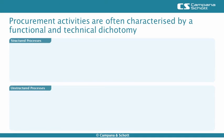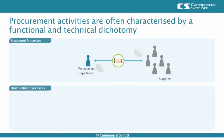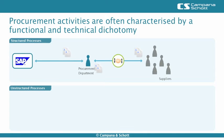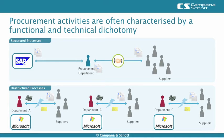Procurement activities are often characterized by a functional and technical dichotomy. The Central Purchasing Department selects suppliers, negotiates frame agreements, and executes the formal ordering. Supplier master data, frame agreements, as well as formal orders are often managed in SAP. The operating departments define their demands, obtain offers, and evaluate them with regard to their functional suitability. On the IT side, these activities are supported by Microsoft Office and email.